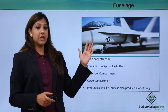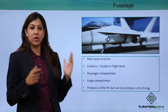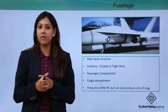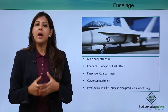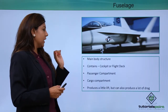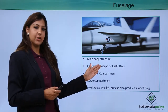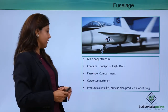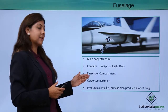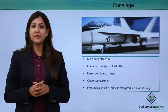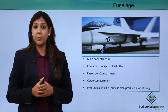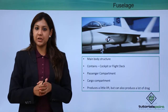Talking about the fuselage — in an aircraft, the fuselage is the main body. It is the main structure which holds everything together: the wings, the engines, the cargo. It contains the cockpit or flight deck at the front, the passenger compartment where passengers sit, and a cargo compartment. There are two kinds of cargo: one is the forward cargo and one is the aft cargo. The forward cargo is air-conditioned inside.